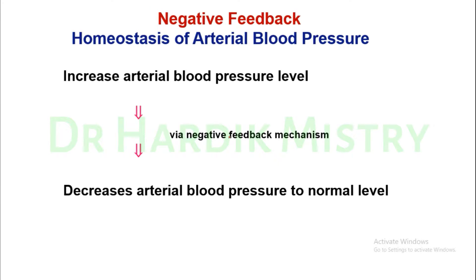In the negative feedback loop, once certain conditions such as blood pressure or blood CO2 level have increased, something happens inside our body to reduce arterial blood pressure as well as reduce the carbon dioxide concentration. This negative feedback loop generates a negative response inside our body.